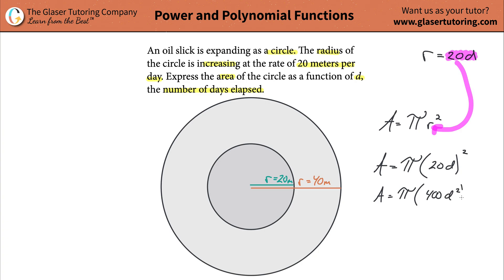So this is going to be 400d squared. And then you can kind of move the 400 on out. So that's going to be 400 pi times d squared.